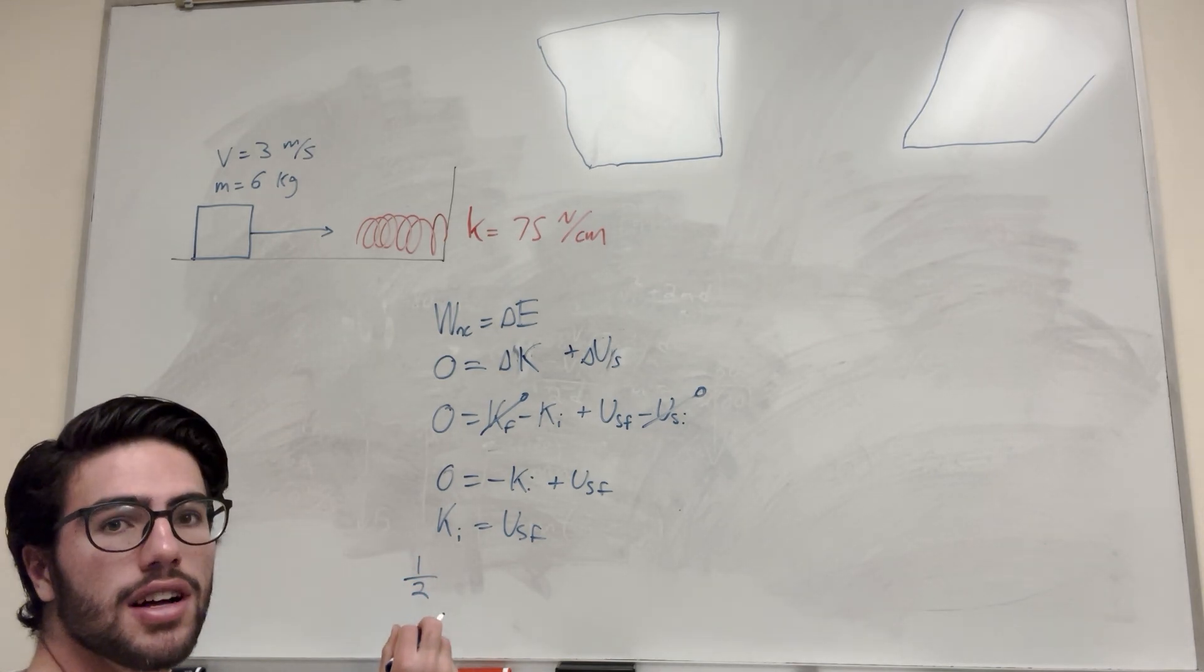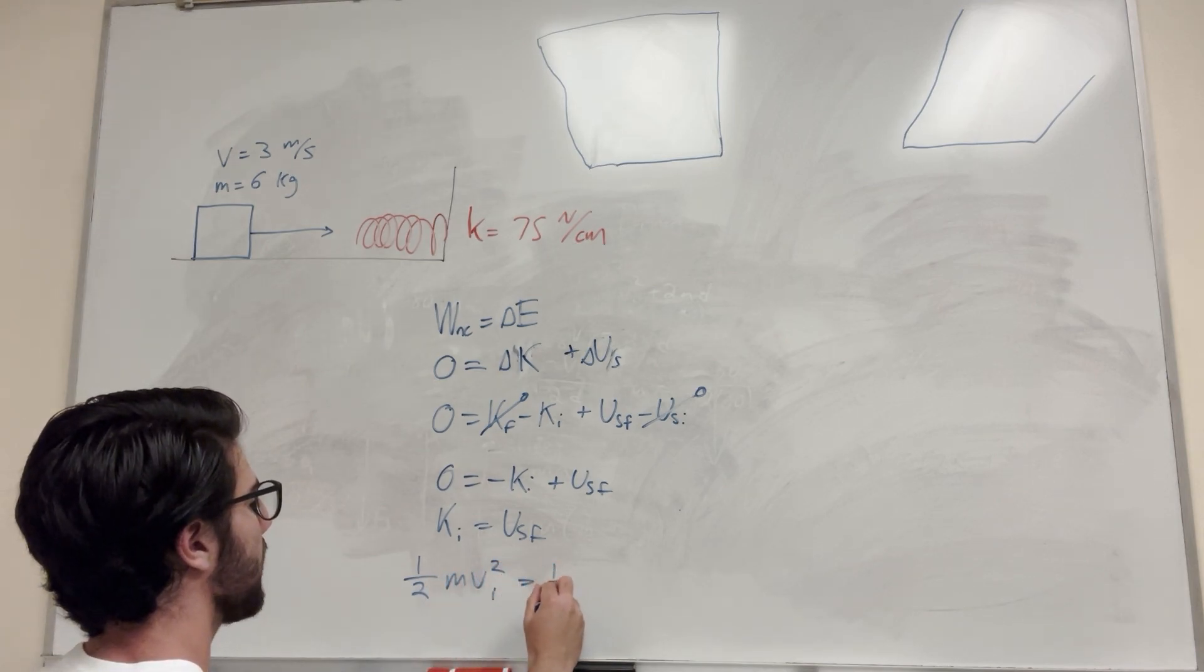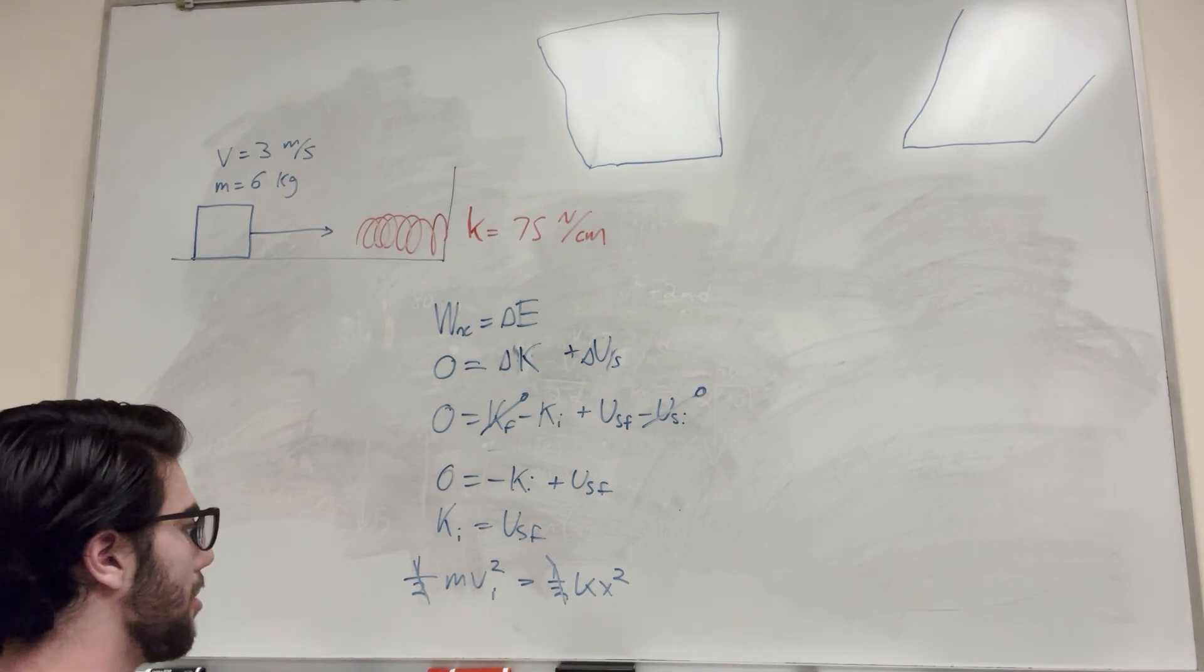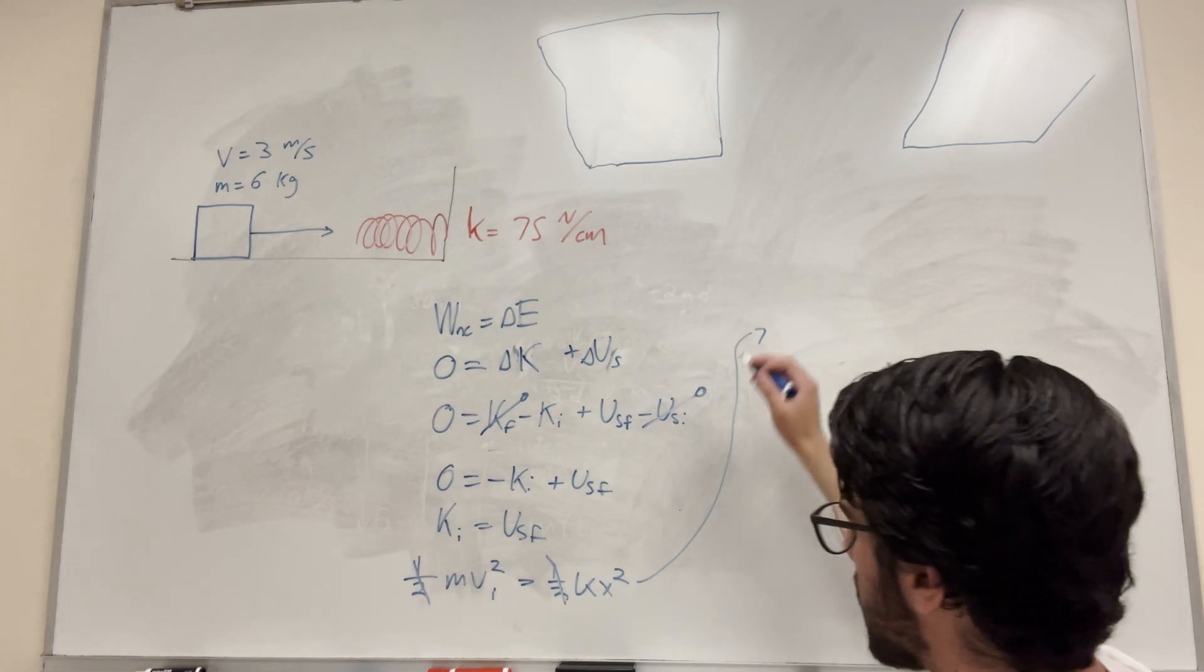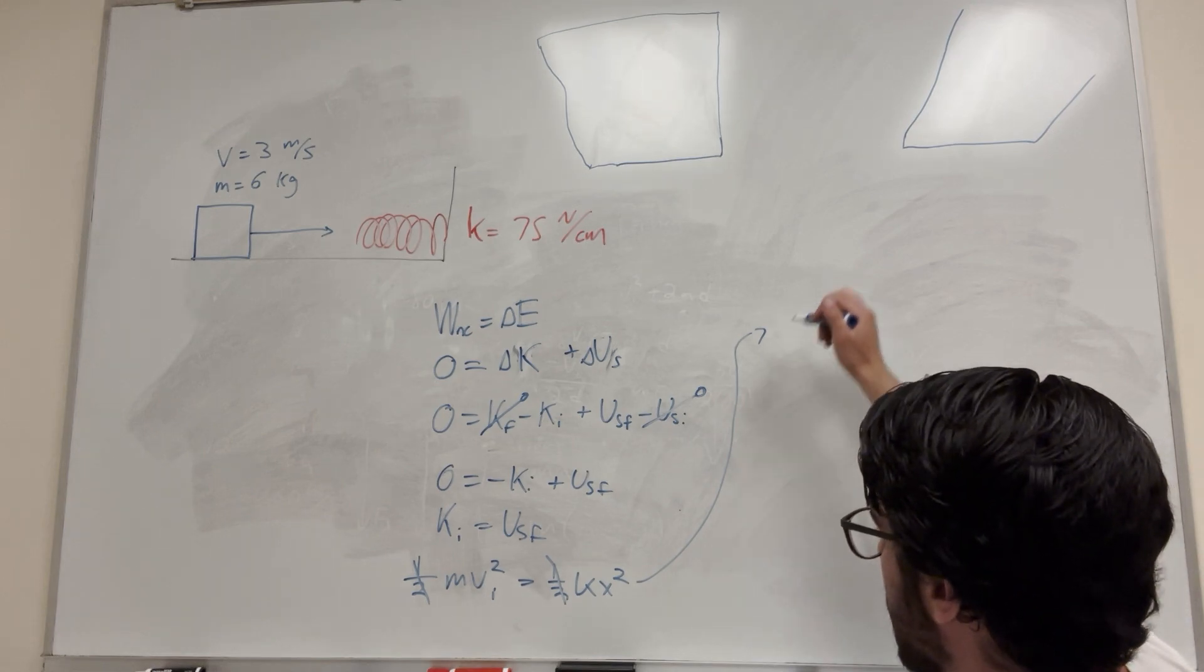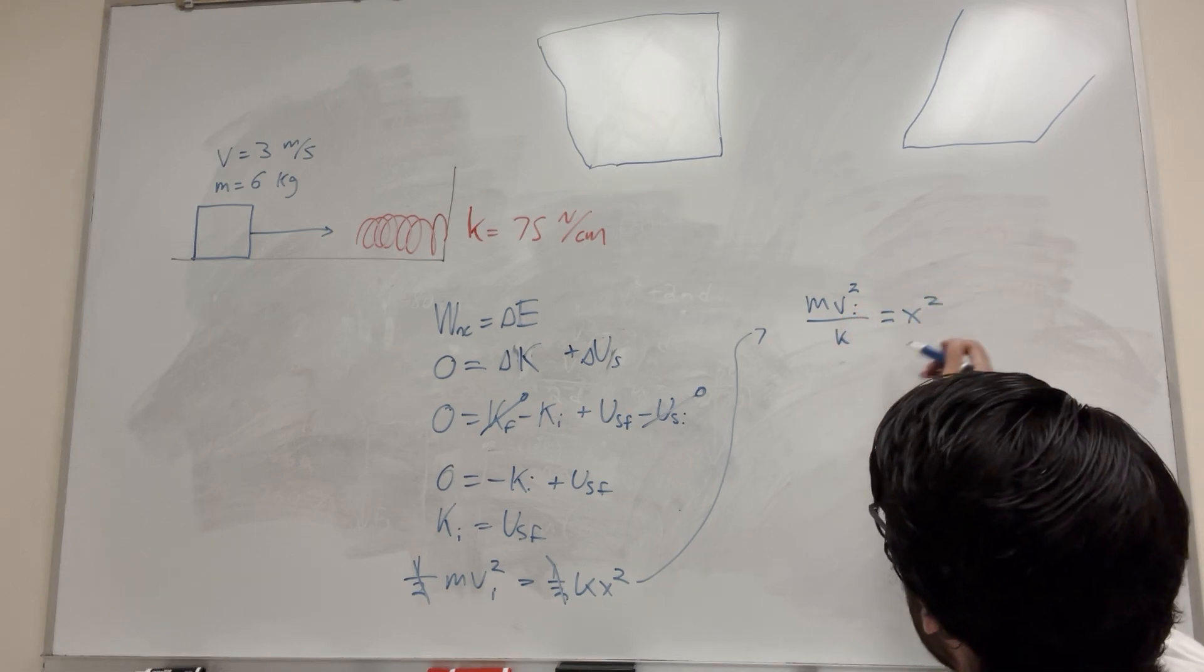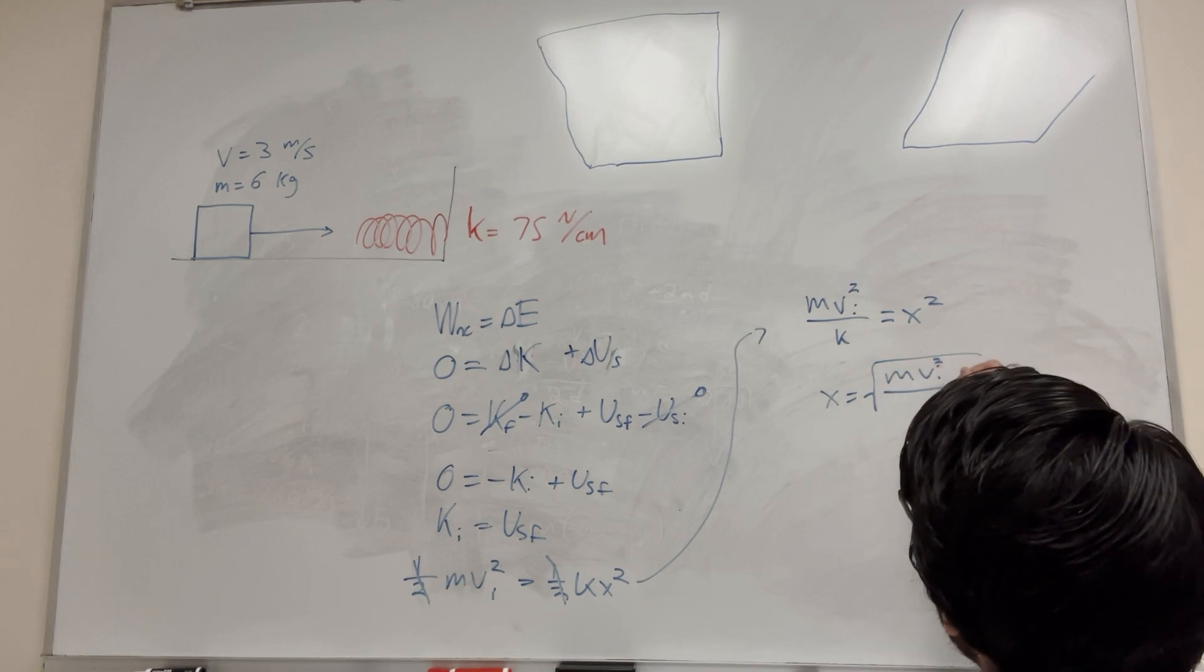So we get to this equation finally, and let's expand it. Kinetic energy: one half mass velocity initial squared is equal to one half K X squared. The one halves are going to drop out because they're on both sides. So it's just going to be mass initial velocity squared is equal to K X squared. Basically we're trying to find X. X is that compression distance. So by dividing the K over, you're going to get mass velocity initial squared divided by K is equal to X squared. And then we can take the square root to get X is equal to the square root of mass velocity initial squared over K.